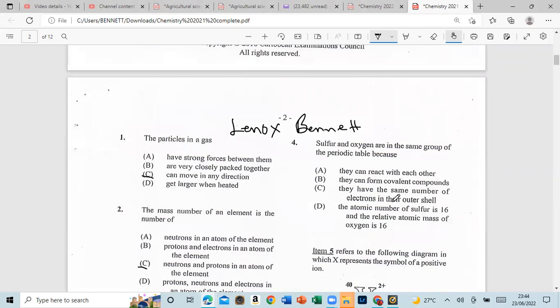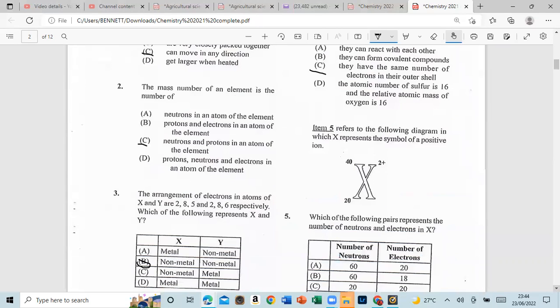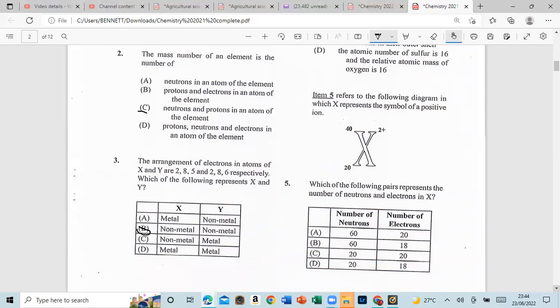Sulfur and oxygen are in the same group of the periodic table because C, they have the same number of electrons in their outer shell. Number five, the following diagram in which X represents the symbol of a positive ion, which of the following pairs represent the number of electrons, and that could be D.